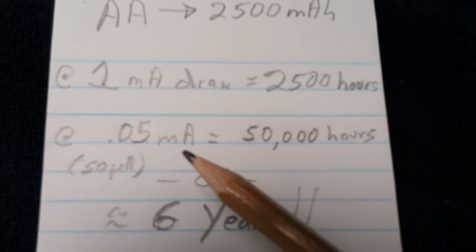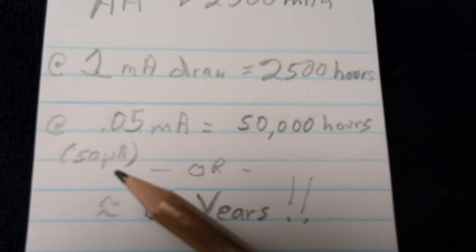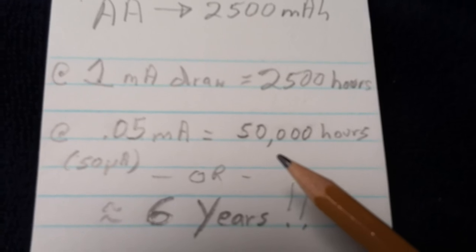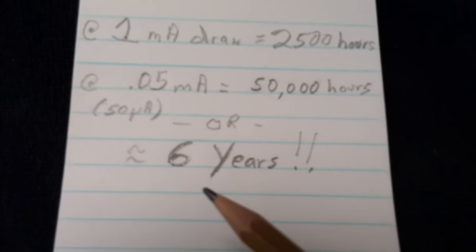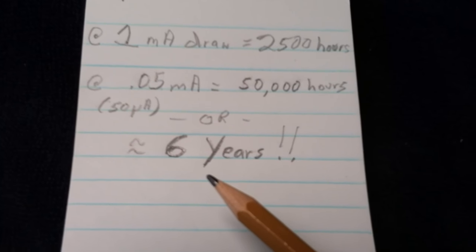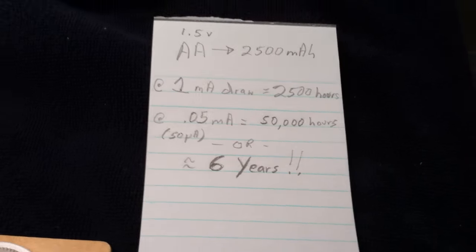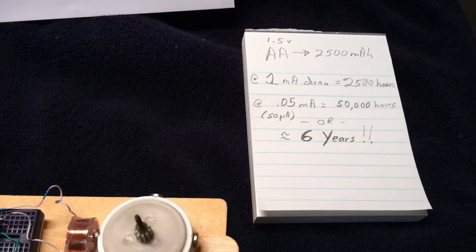Now, at 0.05 milliamps, which is 50 microamps, the way I calculated this was 50,000 hours, or six years. Some of you guys run your calculations real quick and see if I've done this right. If I've done it wrong, I'll pull the video and redo another video.